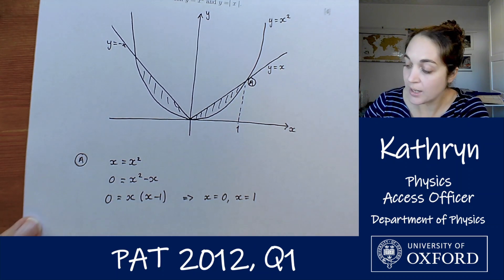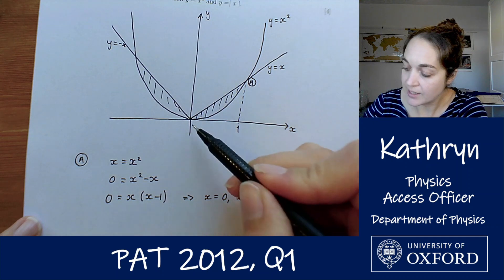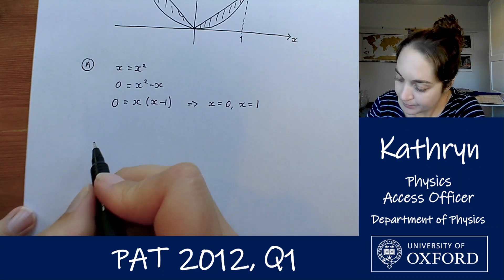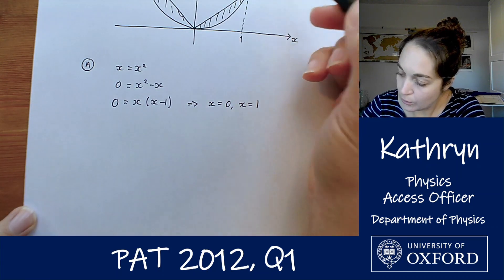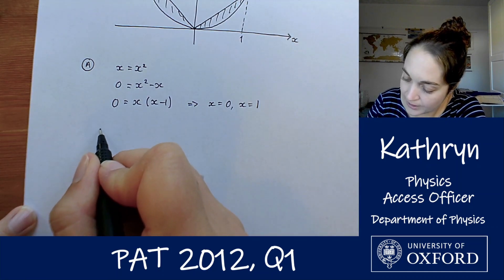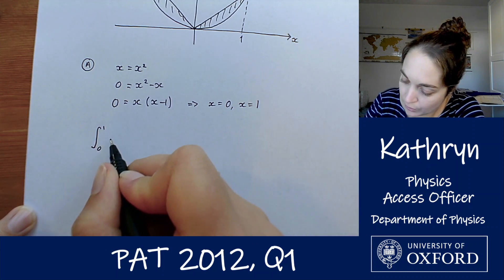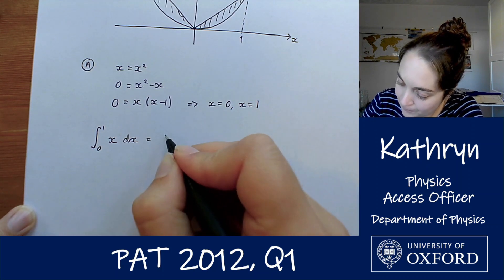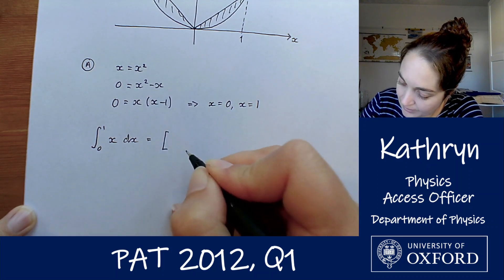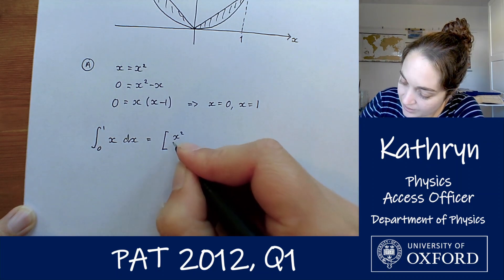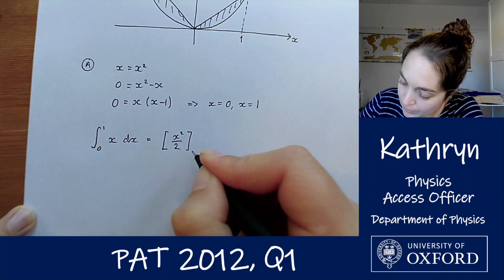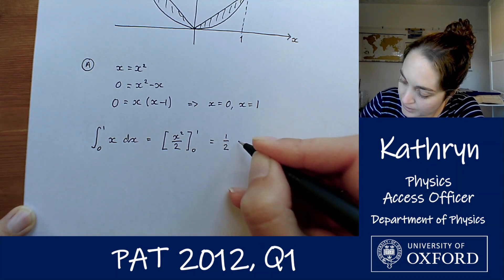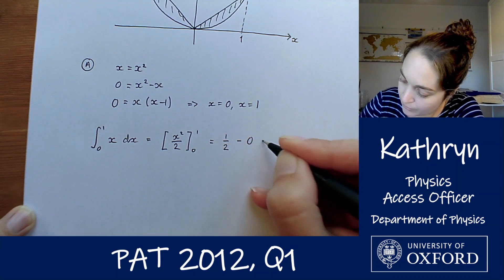Okay, so now we know what we've got to do is we've got to integrate under these curves between 0 and 1. So let's do that. So we're going to do y equals x first, so we're going to find the integral from 0 to 1 of x dx, which is going to be x squared over 2 between 0 and 1, so that is going to give us 1 half minus 0, which is just a half.